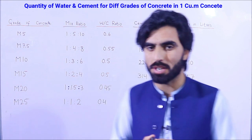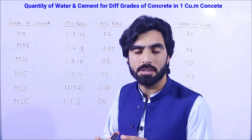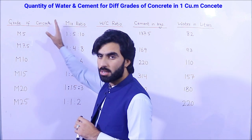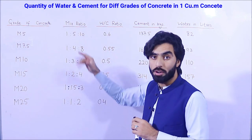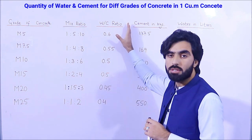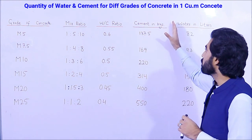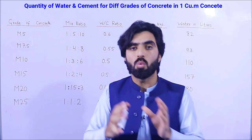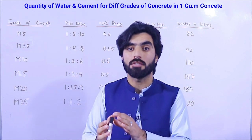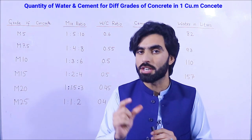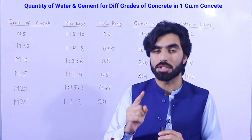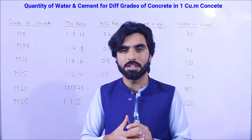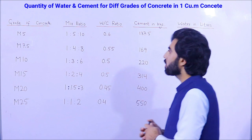Let's start — quantity of water and cement for different grades of concrete. In the first column you can see grades of concrete, the second column is mix ratio for different grades, the third one is water-cement ratio, the fourth one is cement in kilograms, and the last one is water in liters. All values are for one cubic meter of concrete.